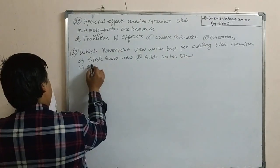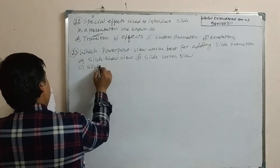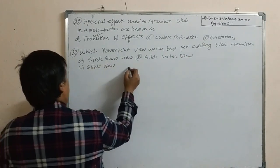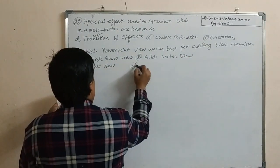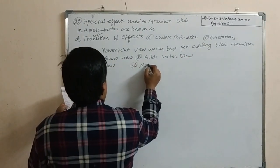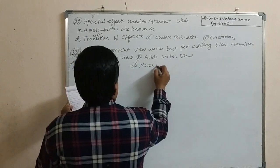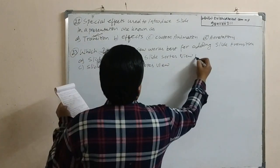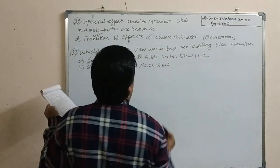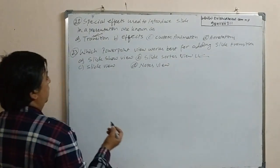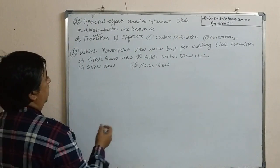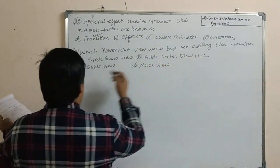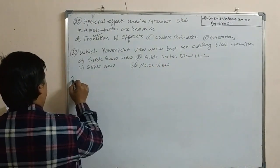Option C, slide shutter view, is the correct answer for this question. The best option for adding a slide transition is slide shutter view.